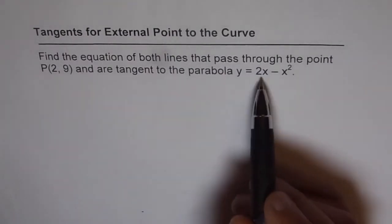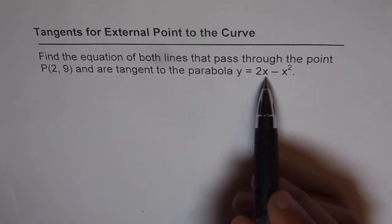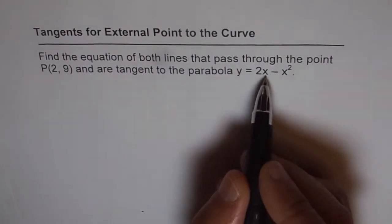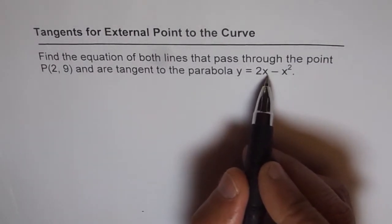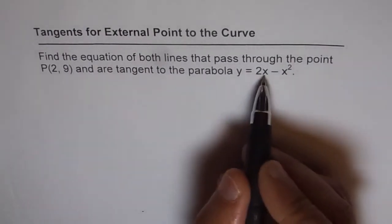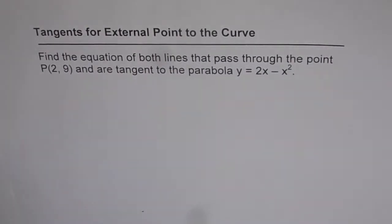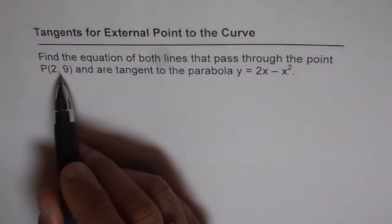If the point would have been on the curve, in that case we could have had only one tangent. You can also test it out. If you put 2 in for x, you get 2 times 2 is 4, and 2 squared is also 4, so y will be 0 at x equals 2. That means the point (2,9) is really not on the curve.